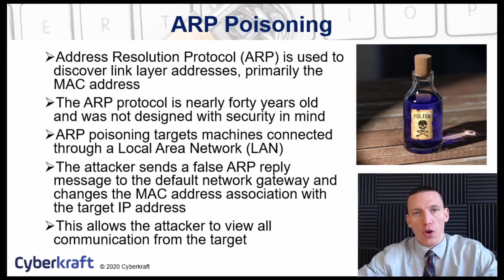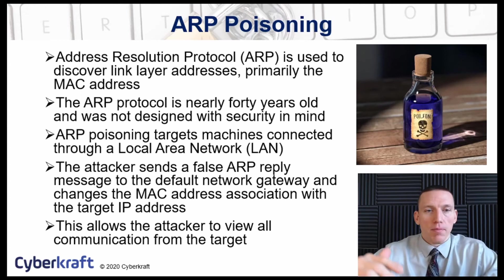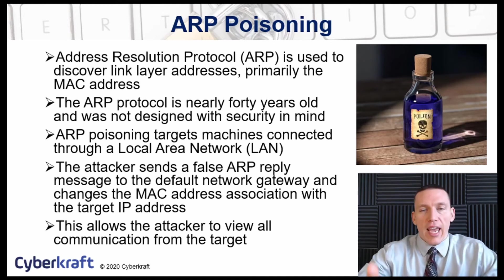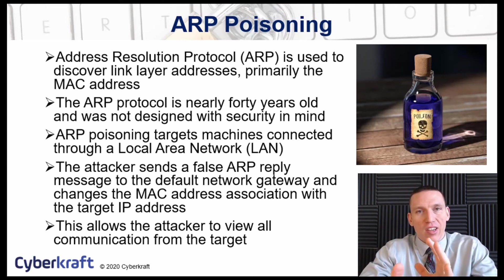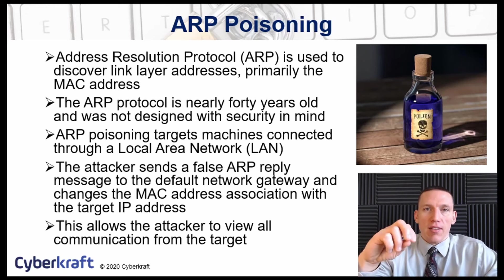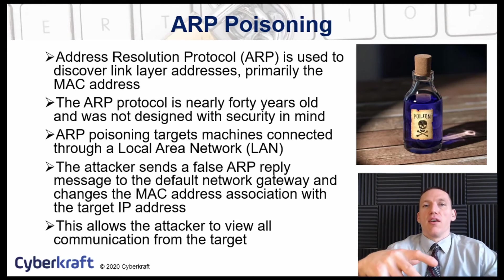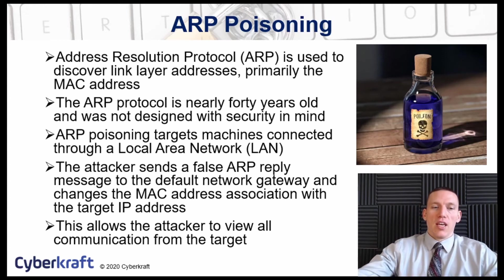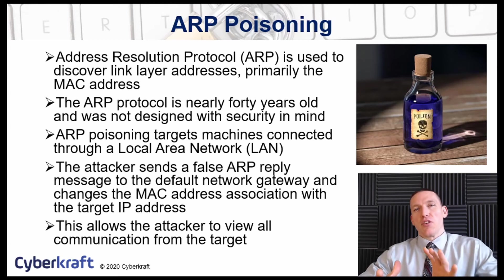ARP, or Address Resolution Protocol, is used to discover the link layer address within the OSI model, specifically MAC addresses, within a local area network. ARP poisoning is when attackers send false ARP requests to fool devices on the LAN into thinking the attacker's machine has a different MAC address — specifically the MAC address of another legitimate device on the network.